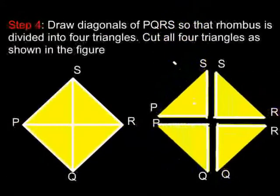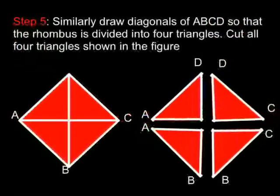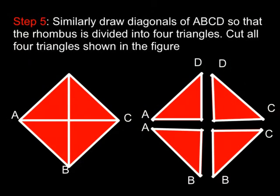Draw diagonals of PQRS so that the rhombus is divided into four triangles. Cut out the four triangles as shown in the figure. Similarly, draw diagonals of ABCD so that the rhombus is divided into four triangles. Cut out the four triangles as shown in the figure.